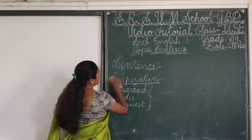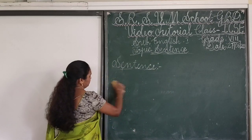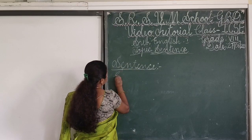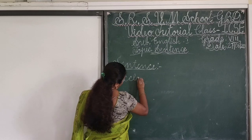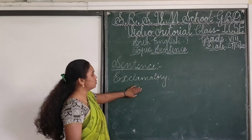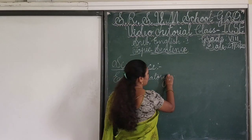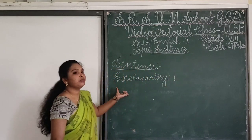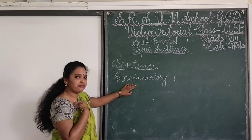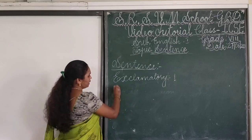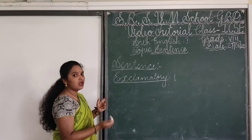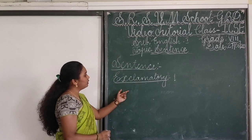The next sentence is an exclamatory sentence. An exclamatory sentence shows the expressions and feelings of the people — my feeling, your feeling, everyone's feeling. So, an exclamatory sentence means a lot. It shows different expressions made by people.